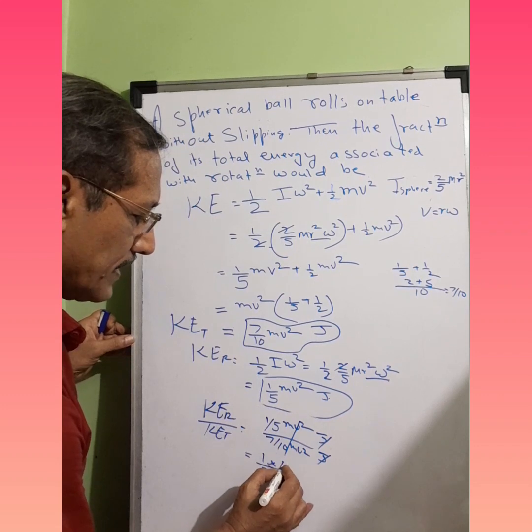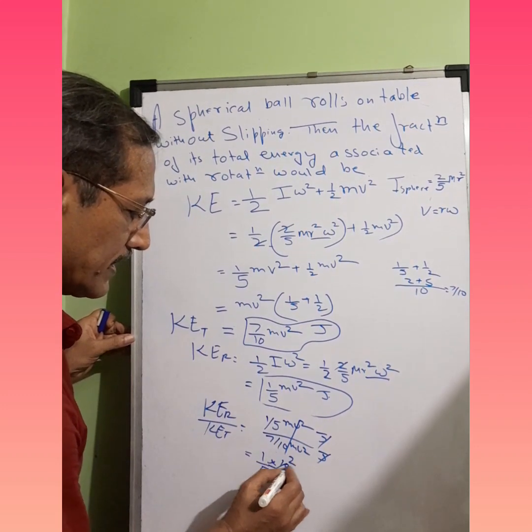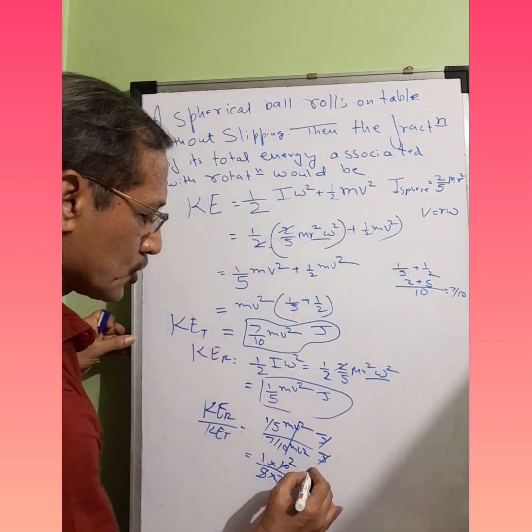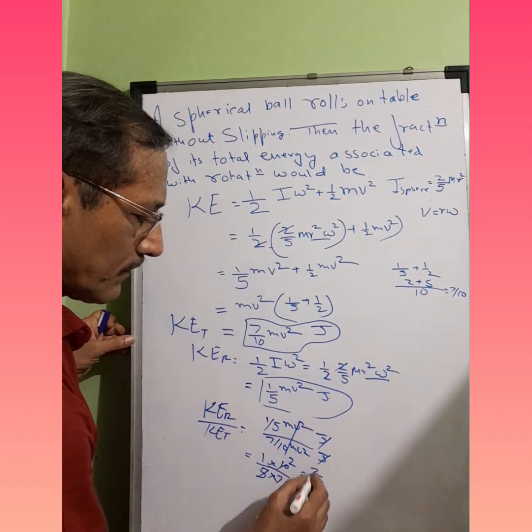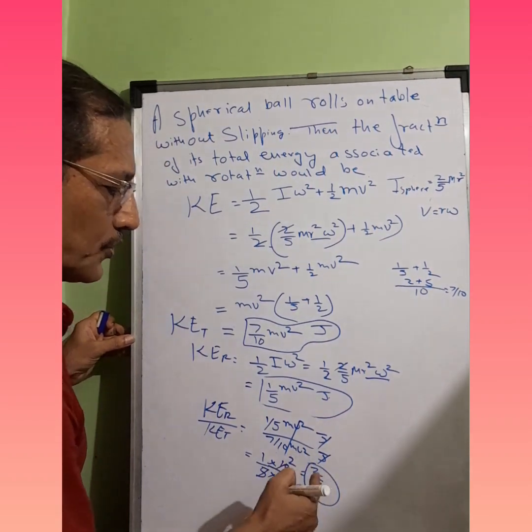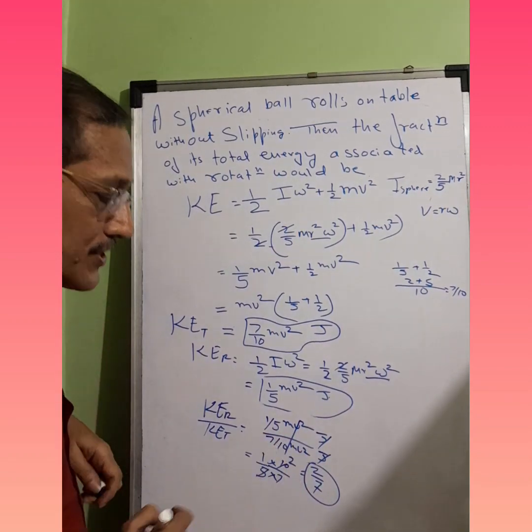So the answer gets the value of 2/7. No unit, as it's a ratio of energies.